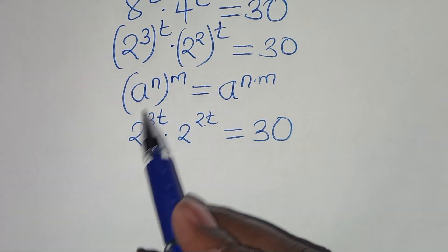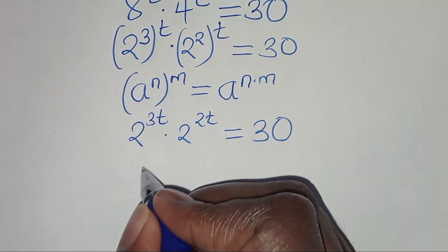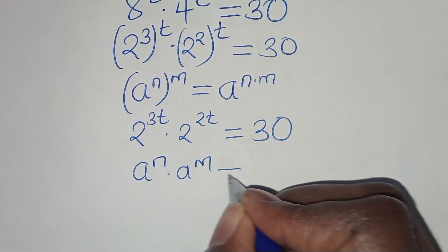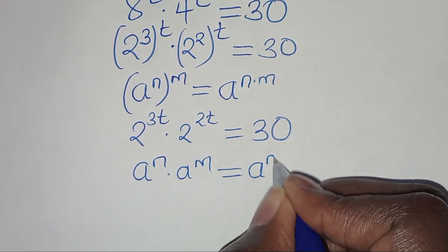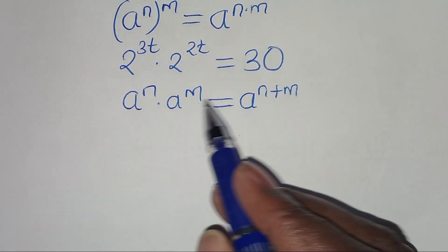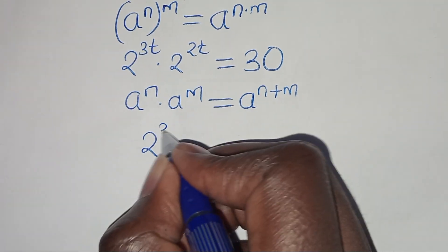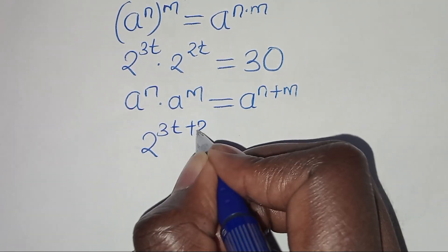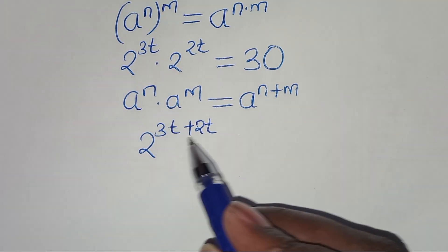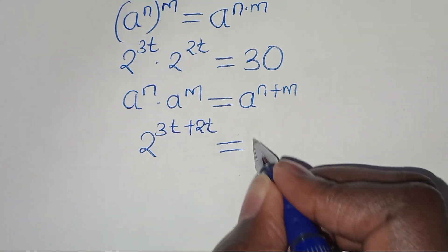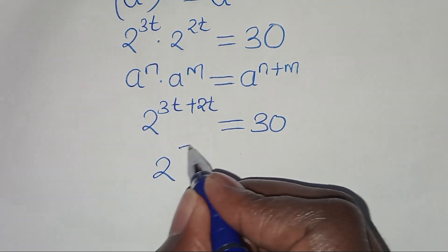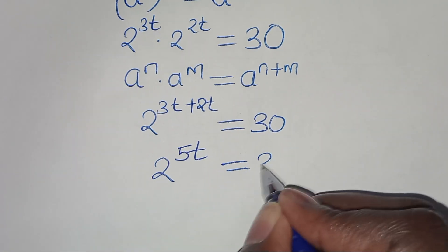The next step: 2 to the power 3t times 2 to the power 2t is in the form of a to the power n times a to the power m, which we can express as a to the power n plus m. Applying this exponent property, we have 2 to the power 3t plus 2t, which simplifies to 2 to the power of 5t, equal to 30.